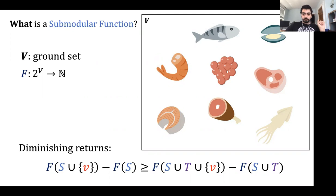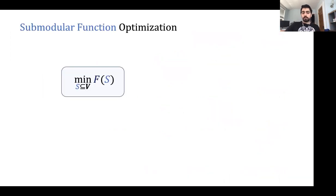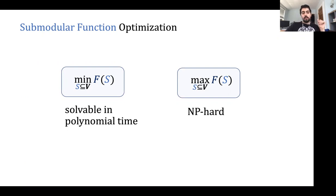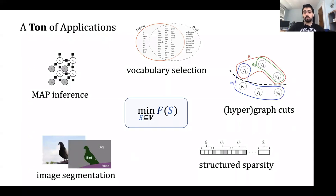Now, what kinds of problems do we want to work on with this function? In general there are two: minimize or maximize it. For minimization, there are known polynomial-time algorithms. Maximization is actually NP-hard, so there are approximation algorithms but no polynomial-time exact algorithm. We'll focus on the minimization problem, which arises in many areas. Our goal will be to get fast algorithms for this problem.